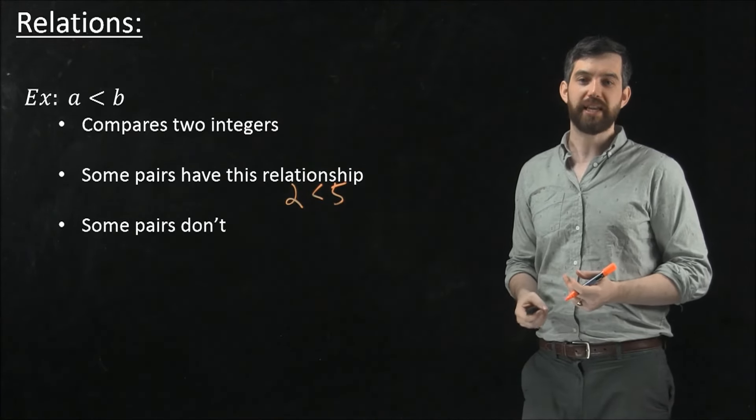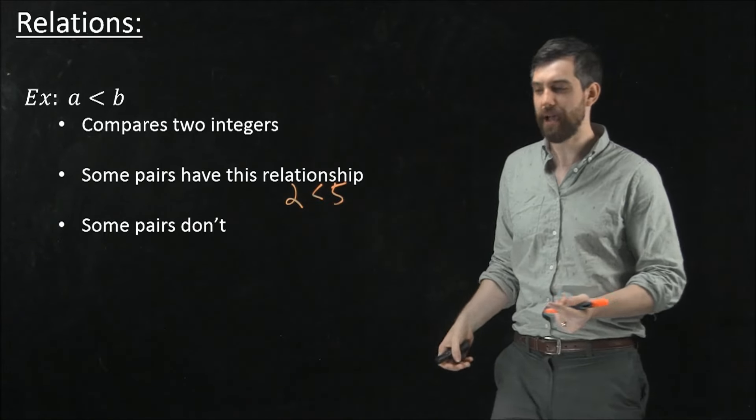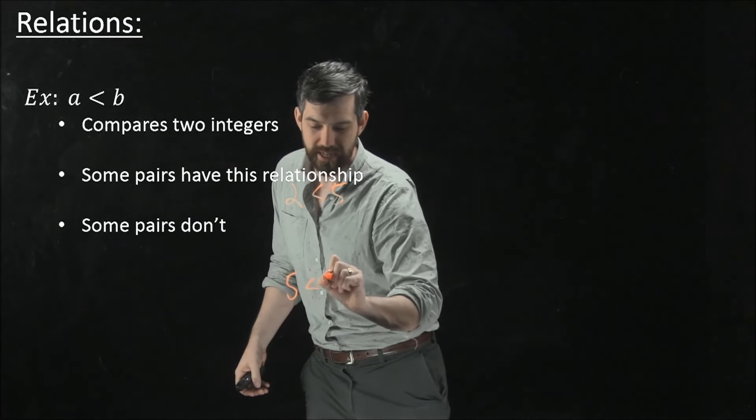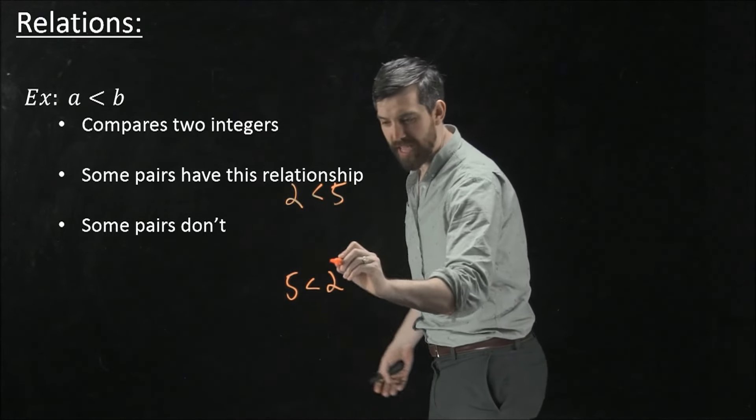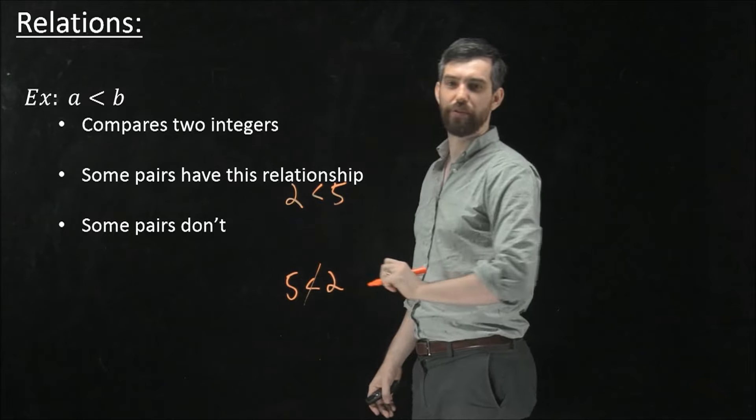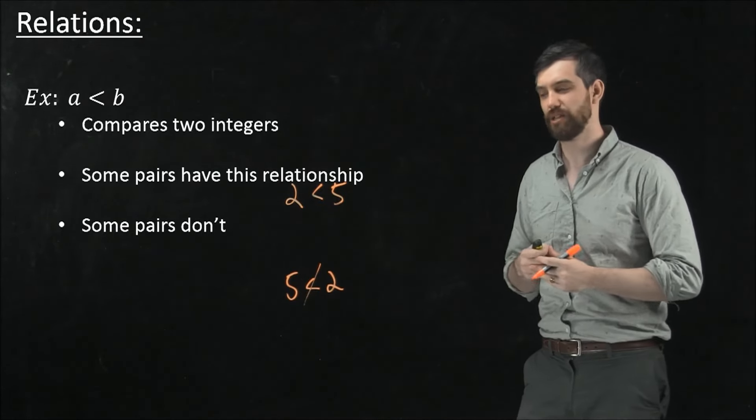But this is not always the case. Some pairs don't have this relationship. For example, if I go the other way around, and I say, is five less than two, well this is not the case. It is not the case that five is less than two.